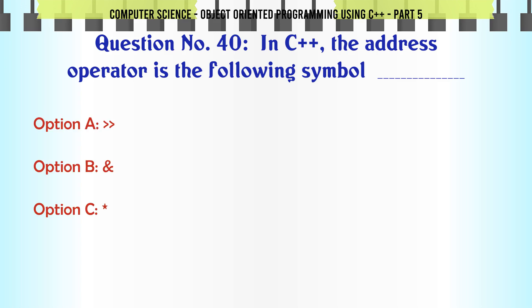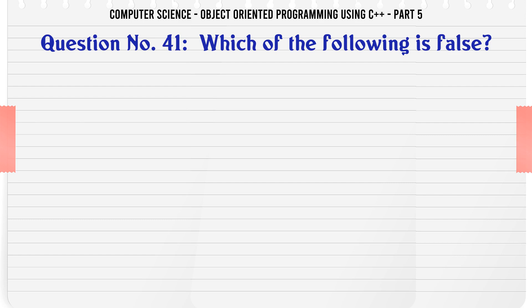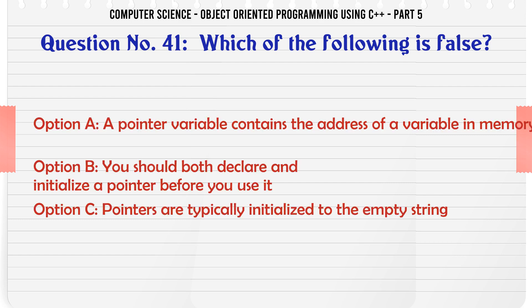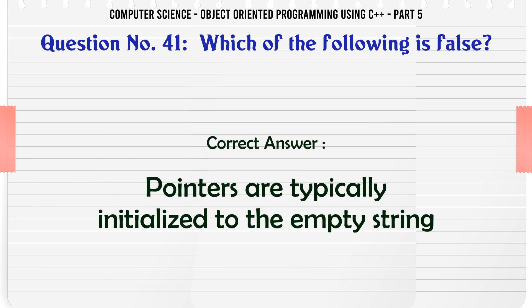In C++, the address operator is the symbol. A. B. C. D. The correct answer is the ampersand (&) symbol. Which of the following is false? A. A pointer variable contains the address of a variable in memory. B. You should both declare and initialize a pointer before you use it. C. Pointers are typically initialized to the empty string. D. A pointer's data type must match the data type of the variable to which it points. The correct answer is: Pointers are typically initialized to the empty string.